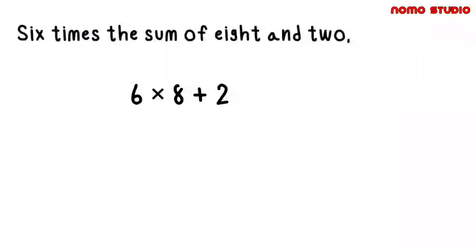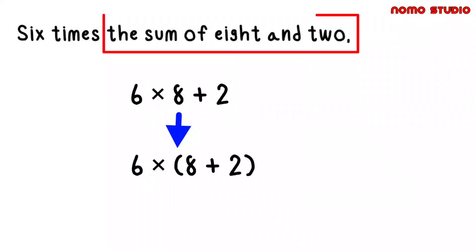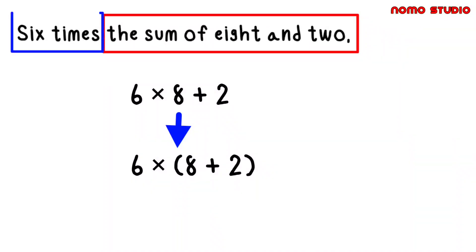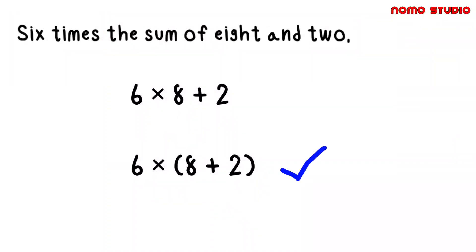If you're familiar with algebraic notation, you know that parentheses are useful in cases like this — they let you group part of an expression and solve it separately from the rest. Here, we can use parentheses to group 8 and 2, so we add them first before multiplying by 6. This is the correct way to write the word problem as an expression. Based on the order of operations, always solve operations inside the parentheses first: add 8 plus 2 first, then multiply that sum by 6. Therefore, the answer must be equal to 60, not 50.